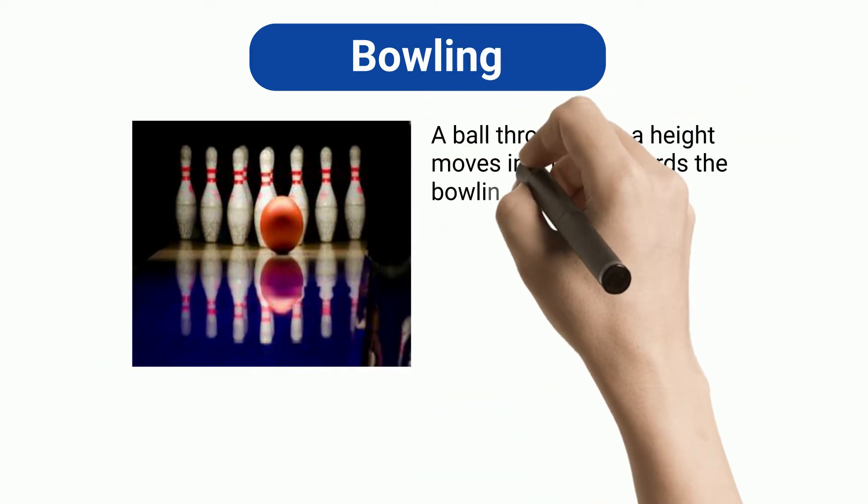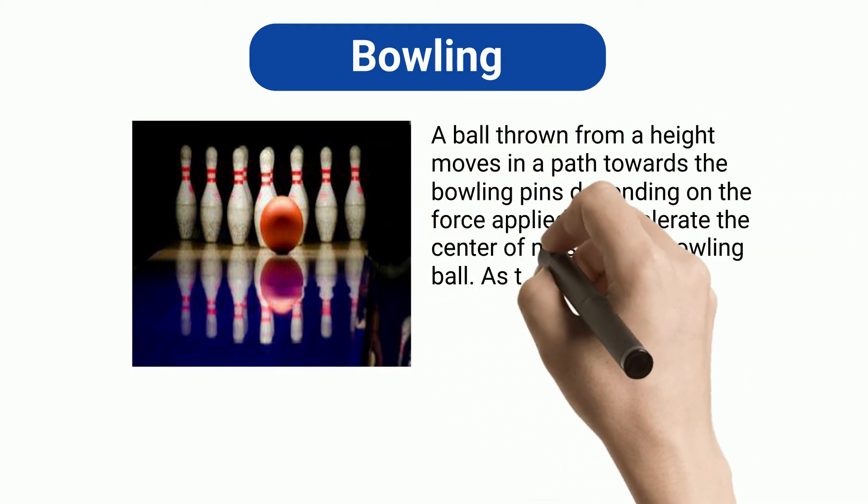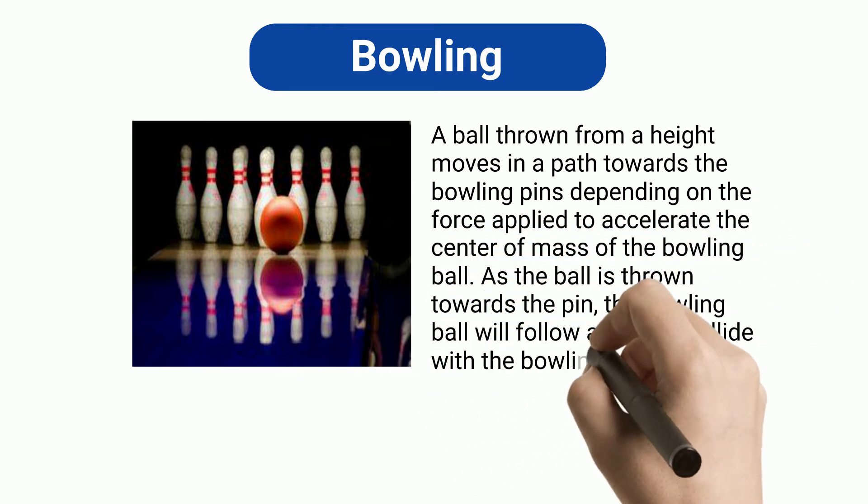Bowling: A ball thrown from a height moves in a path towards the bowling pins depending on the force applied to accelerate the center of mass of the bowling ball. As the ball is thrown towards the pin, the bowling ball will follow a path to collide with the bowling pins.